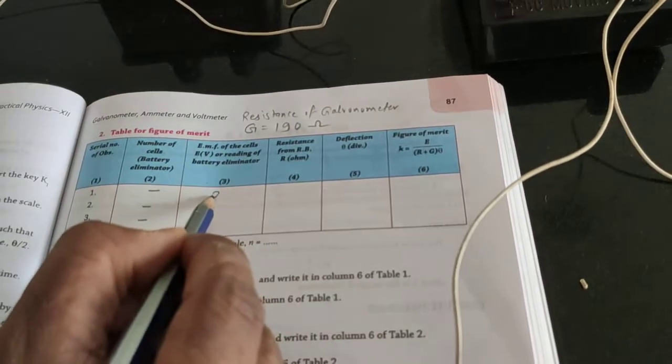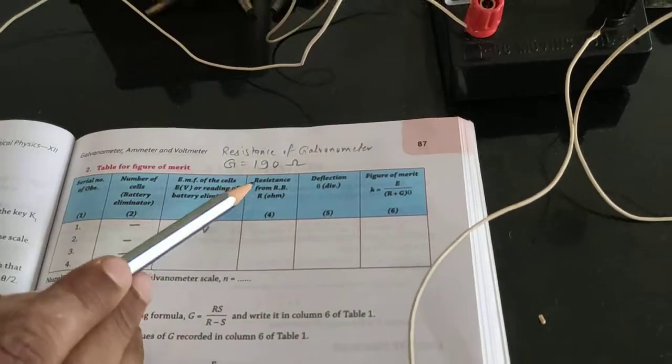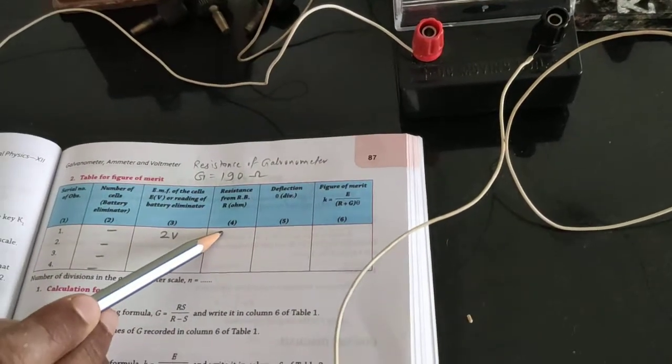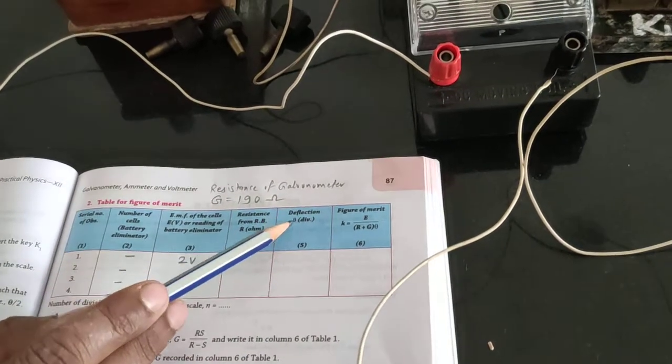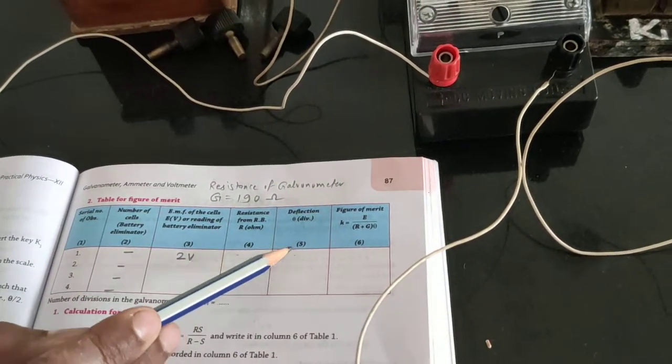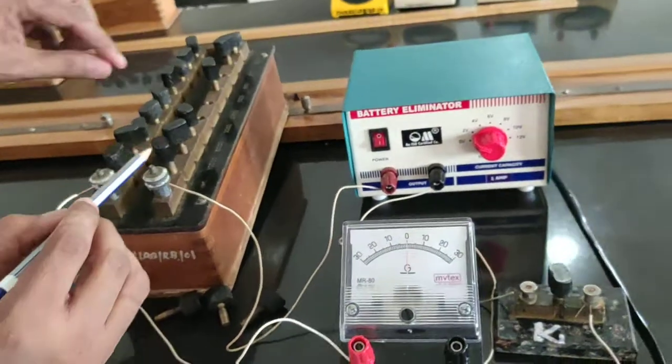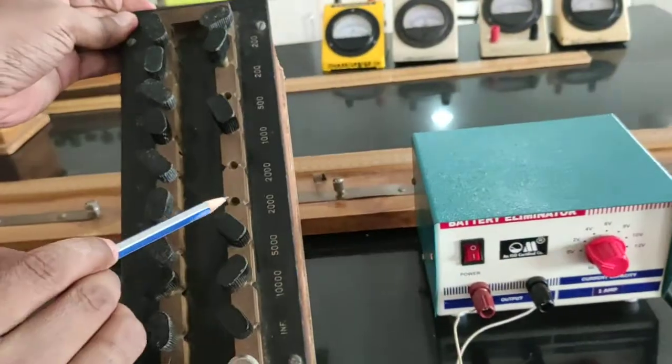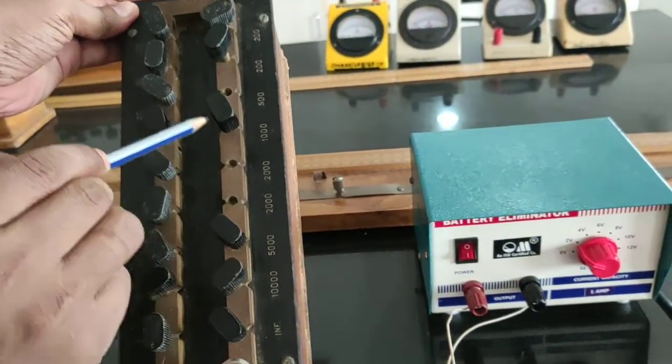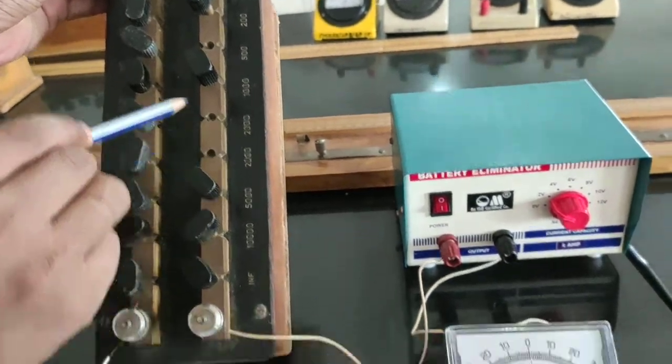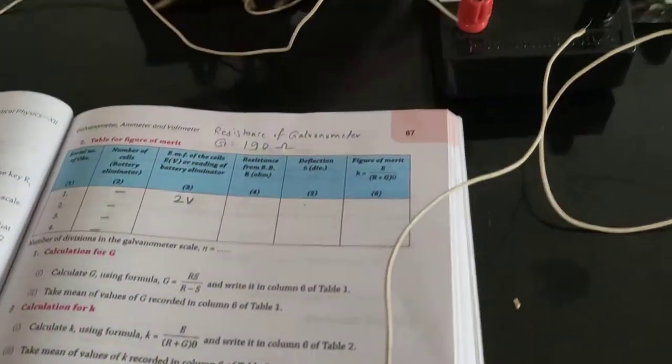Now the method is: first you have to take out the resistance, some resistance, so that the deflection should be as maximum as possible. You can check out - here I have kept 2000 plus 2000 plus 500, so total 4500 ohm resistance.